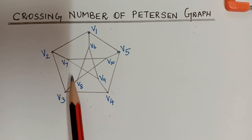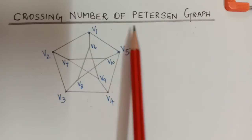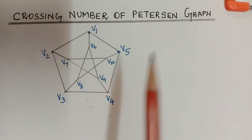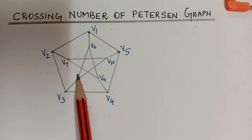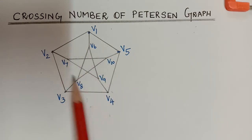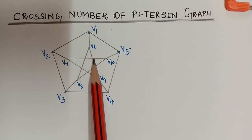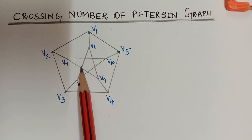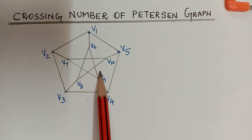Hello students, we shall now find the crossing number of the Petersen graph. This is a Petersen graph with 10 vertices. It is a non-planar graph with too many crossings — we can see crossings here, here, here, here, and here. We shall now try to remove these crossings by redrawing the graph in a plane.